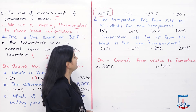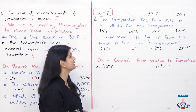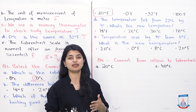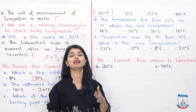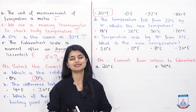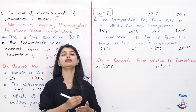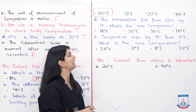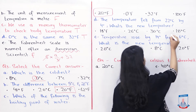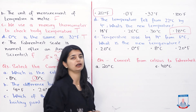Part D: the temperature fell from 22 degrees centigrade by 4 degrees — what is the new temperature? Since the temperature decreased, we subtract: 22 minus 4 equals 18. The answer is 18 degrees centigrade. Because the measurement is in centigrade, we select that option.